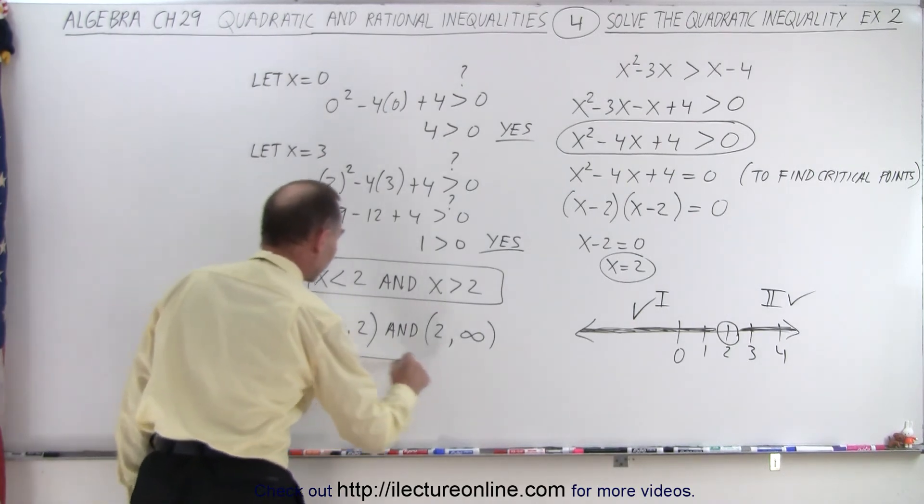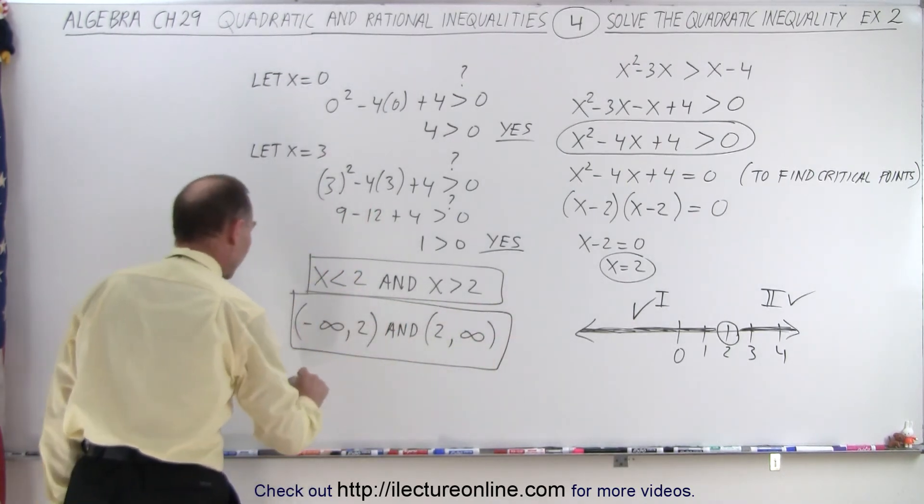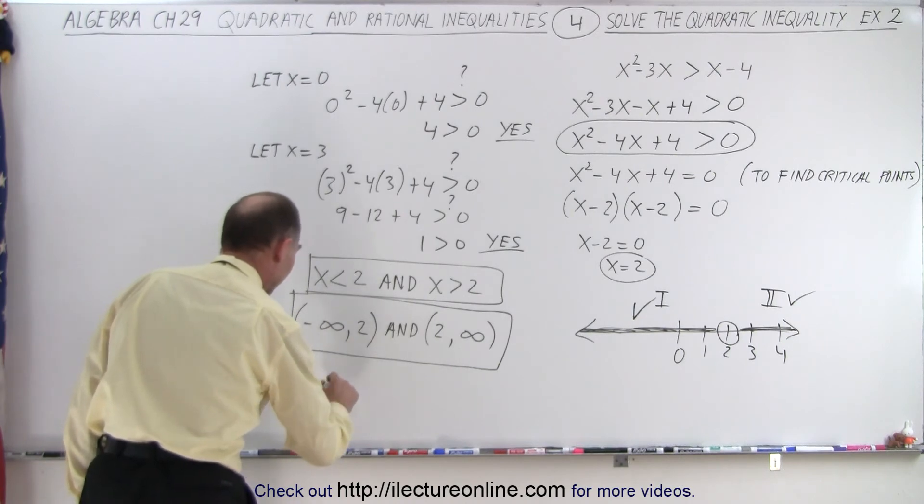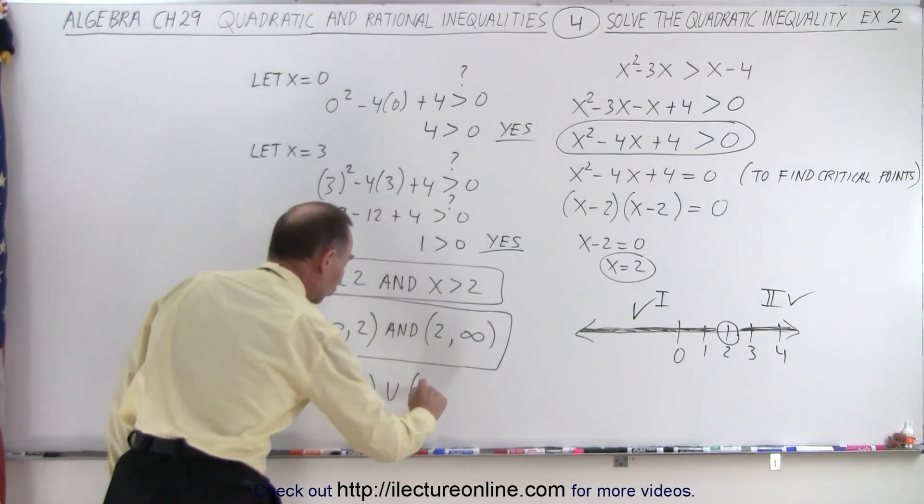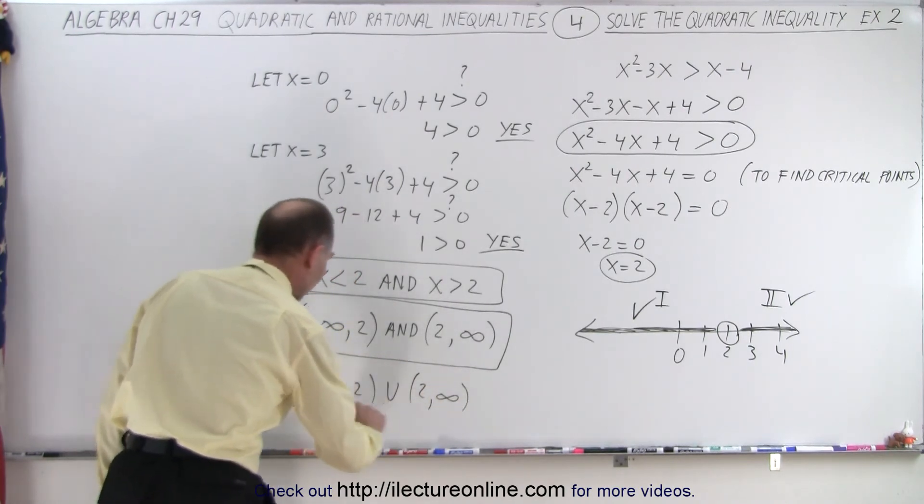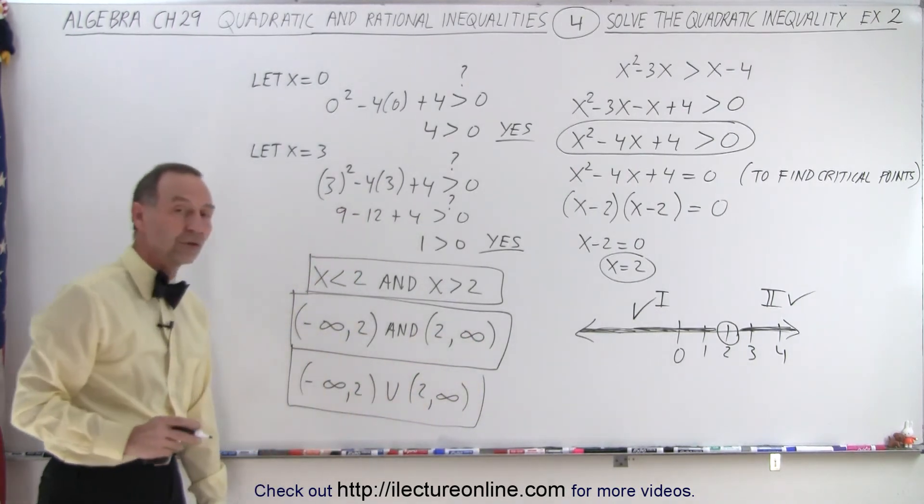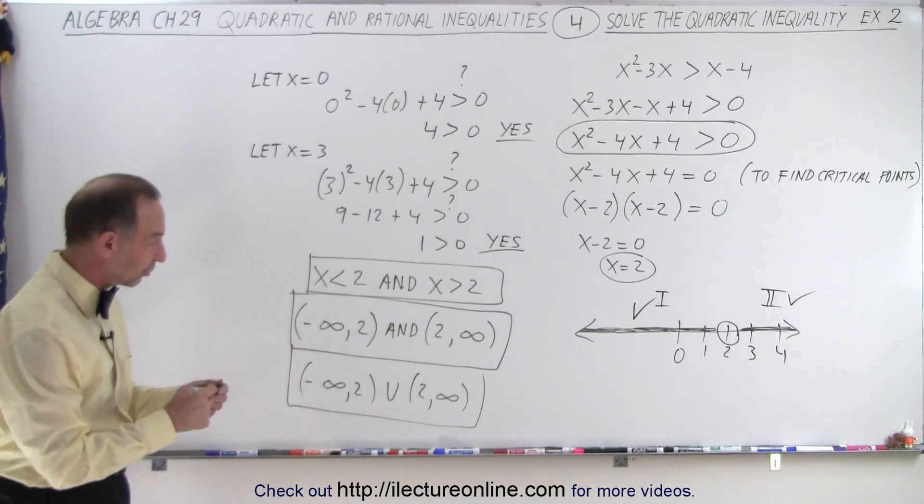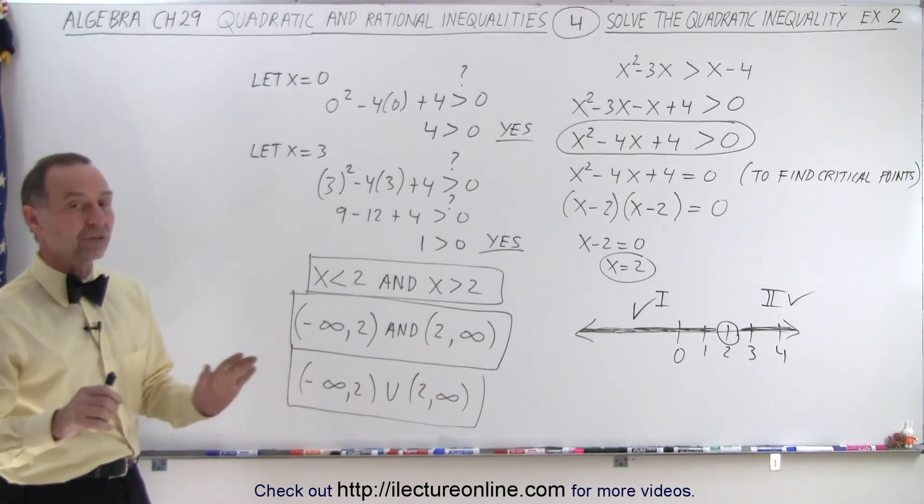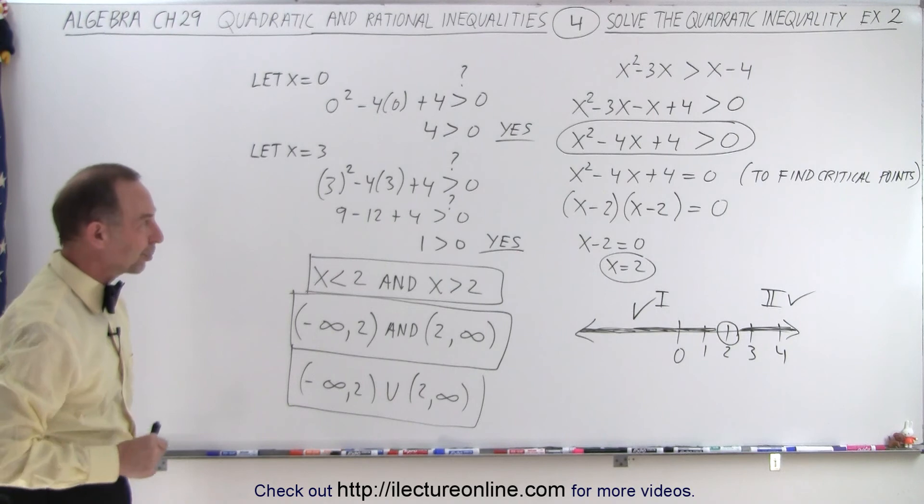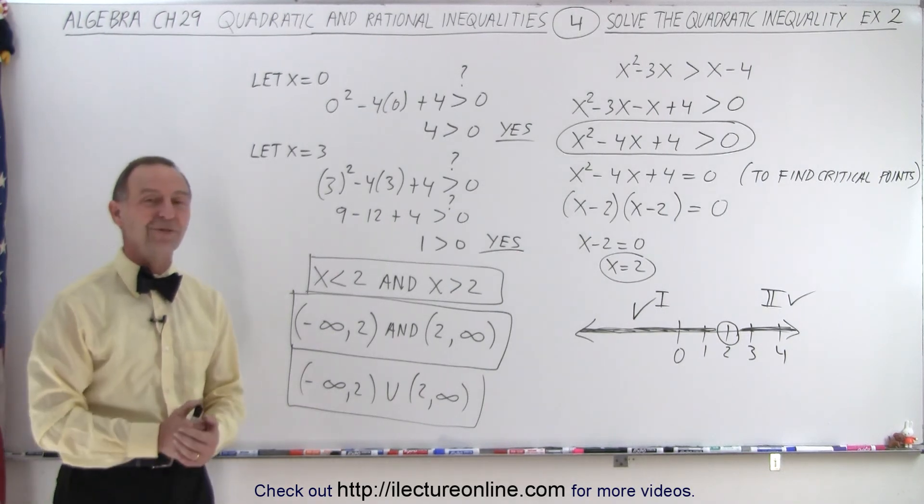So we can write it like this, or we can write the mathematical symbol negative infinity to 2 with parentheses and 2 all the way to infinity, and so we can write it like this as well. So those are the mathematical ways in which we can express the answer: all values on the number line except the number 2. And that is how it's done.